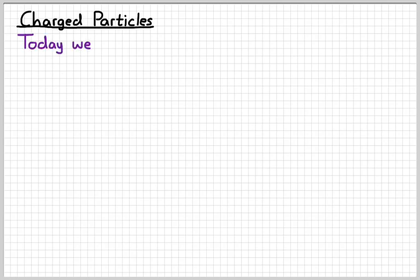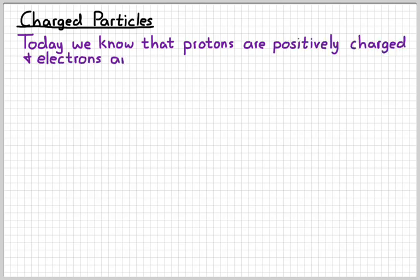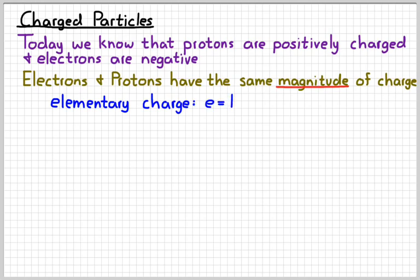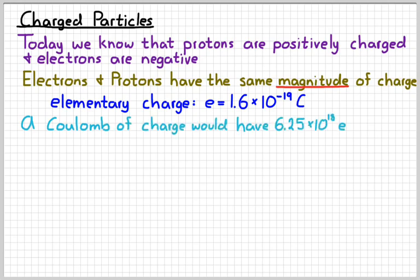Okay, so the things that are actually charged. We know today, after lots and lots and lots of observations, that there are two particles within an atom which are charged. Protons that are positively charged and electrons which are negatively charged. As it turns out, both those particles have the same magnitude or size of charge. And we call that charge the elementary charge. And the elementary charge in coulombs has a value of 1.6 times 10 to the negative 19 coulombs.